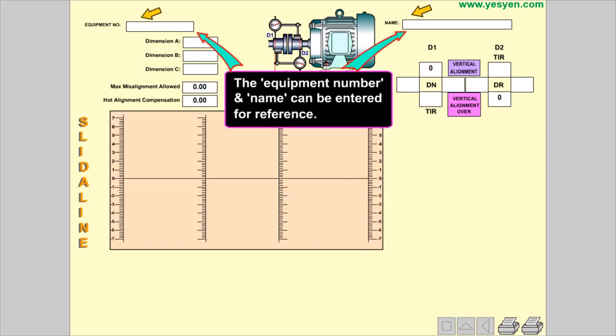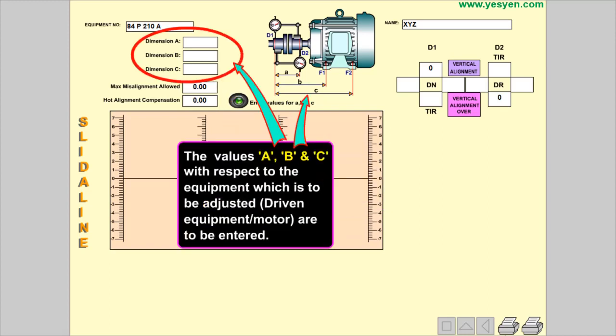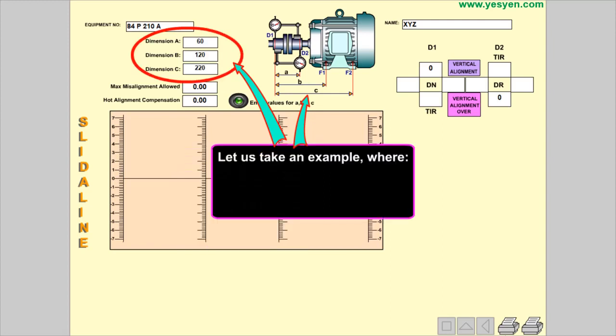The equipment number and name can be entered for reference. The maximum misalignment allowed and hot alignment compensation can be set to desired values. The values A, B, and C with respect to the equipment which is to be adjusted are to be entered.